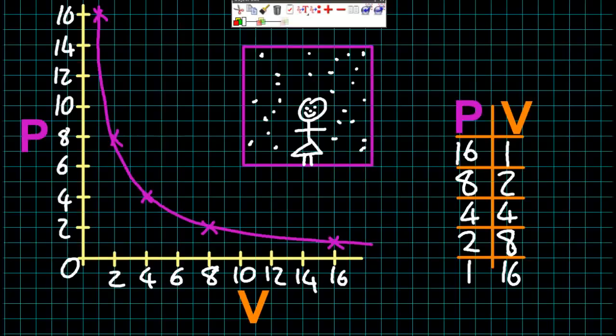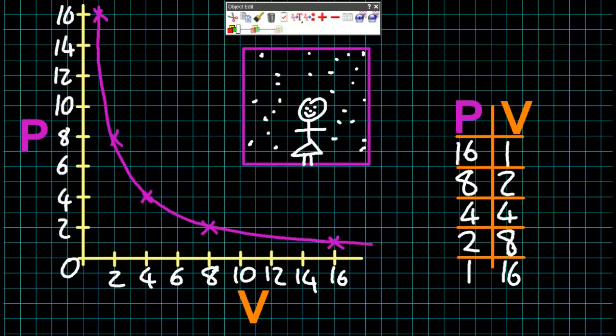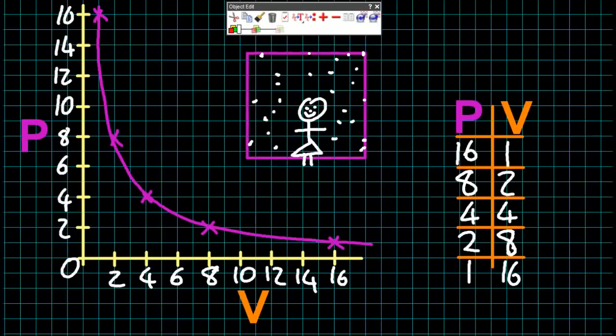Because now there's less area for those gas particles to hit against. So the pressure is going to consequently be increased, because there are going to be more collisions per unit area.